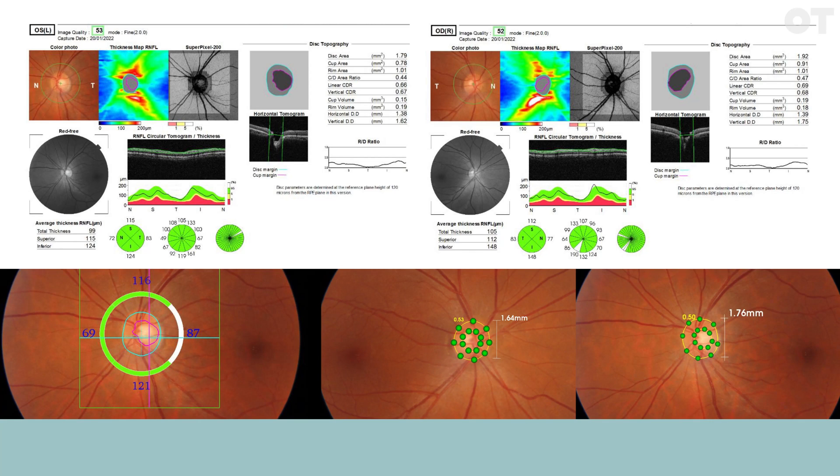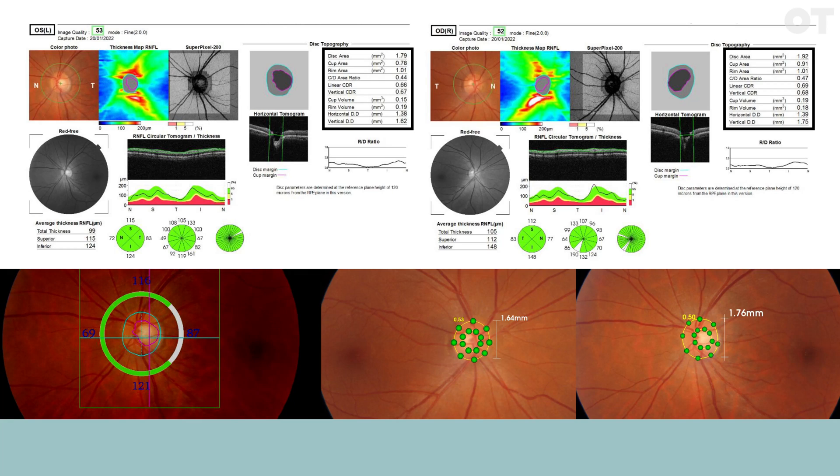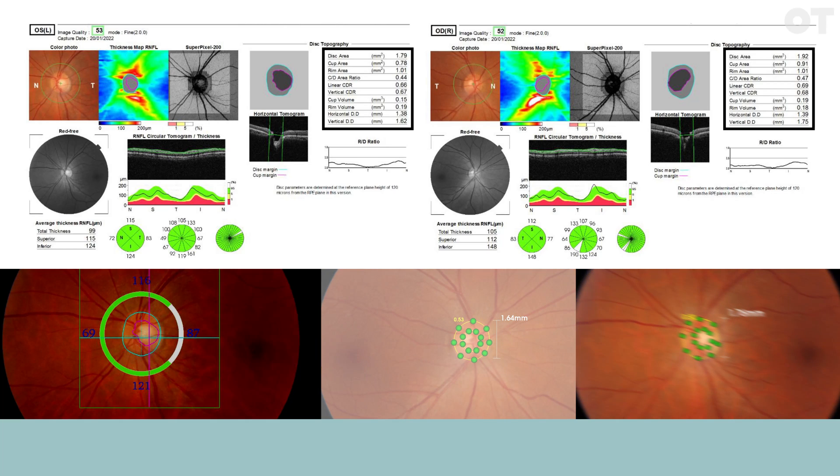An OCT or optical coherence tomographer can measure disc size and calculate CD ratios for you. This is fairly accurate but be aware that different manufacturers' machines may give you different values. You do need to assess the image for yourself to ensure the instrument has determined the boundaries sensibly. It can misjudge it if the view were impeded by a small pupil or media opacities or if the patient moved a lot.